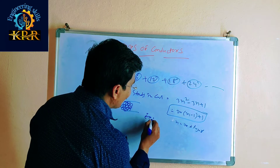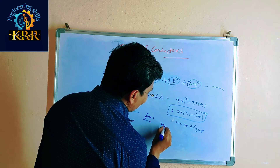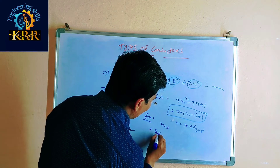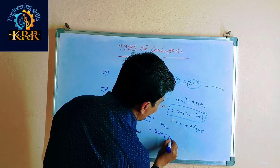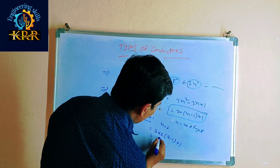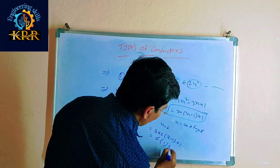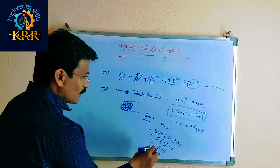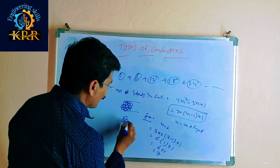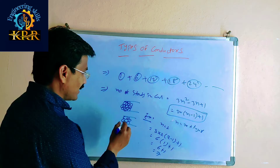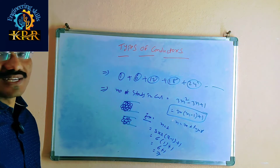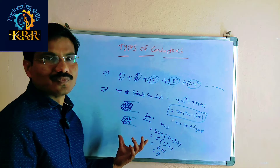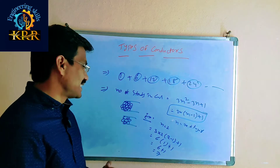For example, if n = 2 (number of layers is 2), then: 3 × 2 × (2−1) + 1 = 3 × 2 × 1 + 1 = 6 + 1 = 7. So with 2 layers, there are 7 strands. You can calculate the number of strands this way using this formula.